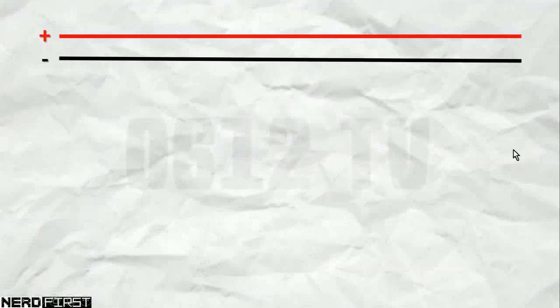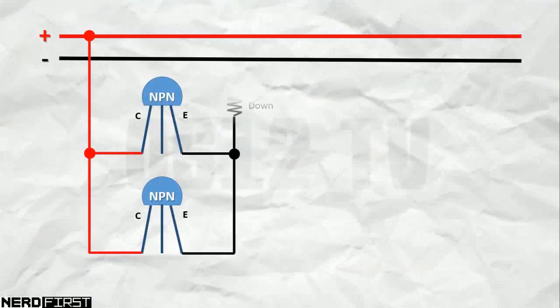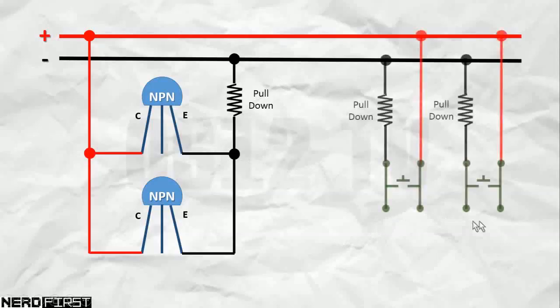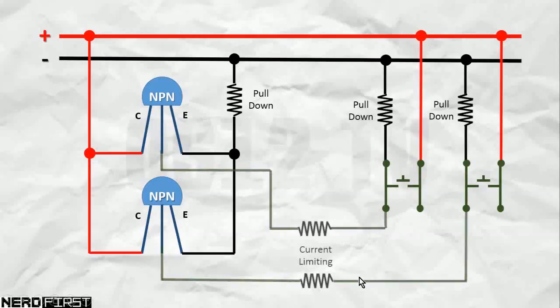Again, we will start off with our power rails, and of course, our two transistors, which are now connected in parallel. Of course, they go back to ground through a pull-down resistor. Then we bring in our two push buttons, and each one of the push buttons will go to the basis of our two transistors. Of course, through current limiting resistors.